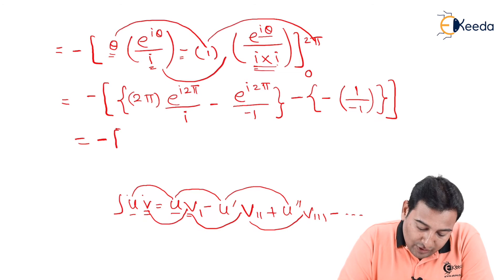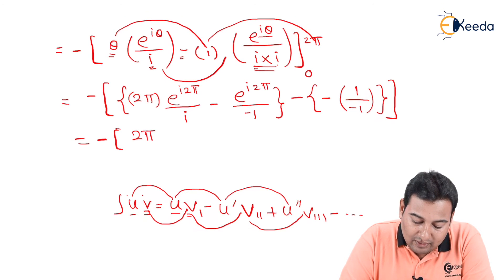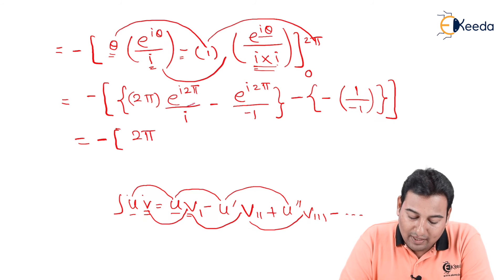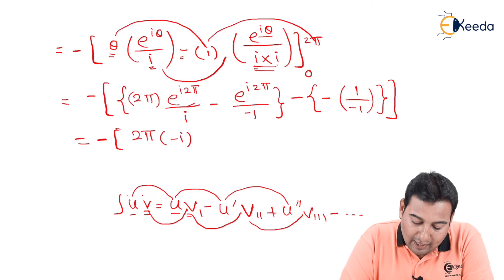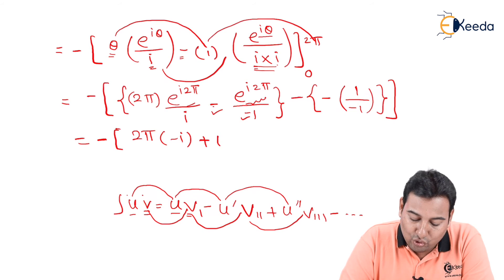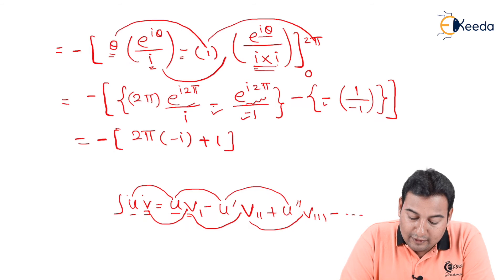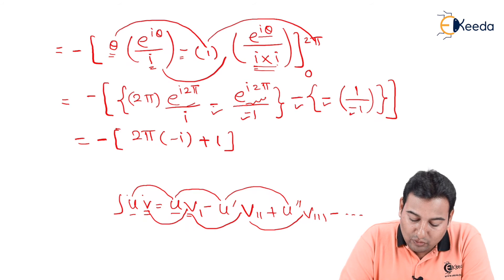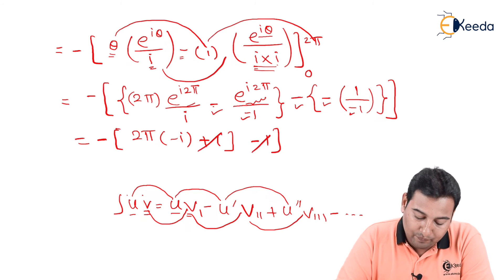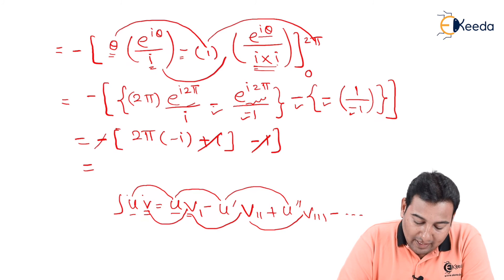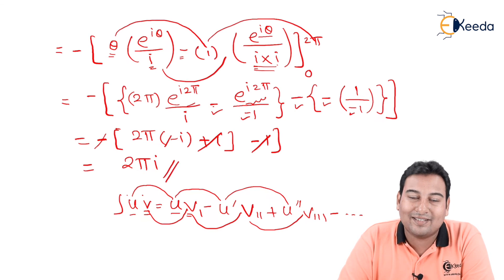Applying these: e^(2πi) = 1, so 2π · 1/i = 2π · (−i) = −2πi, and 1/i² = −1. The lower-limit correction (−1/(i²)) = −(−1) = 1. Combining everything with the outer −1 factor, the negatives cancel and we are left with 2πi, which is exactly what was asked to prove. Thank you.